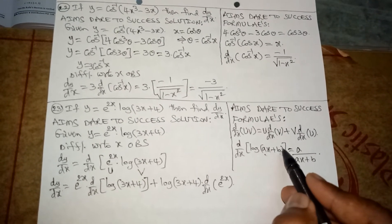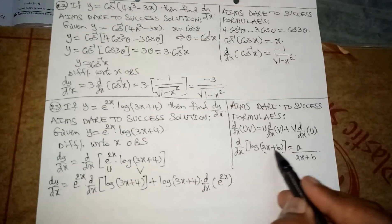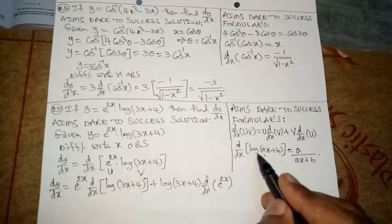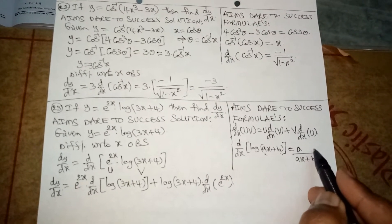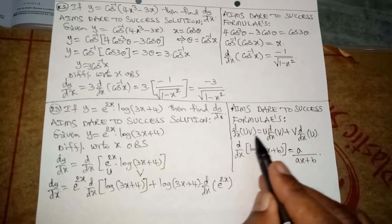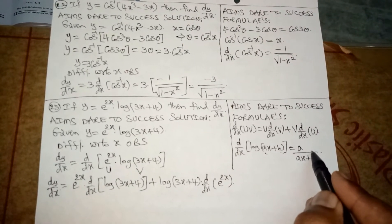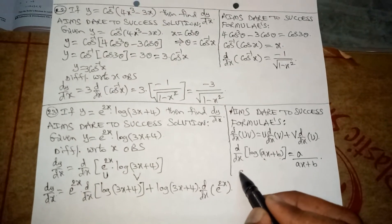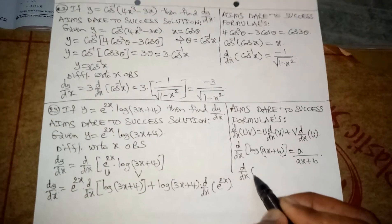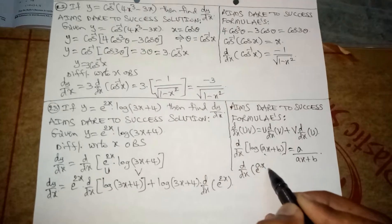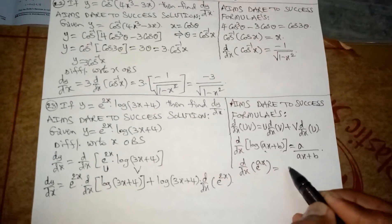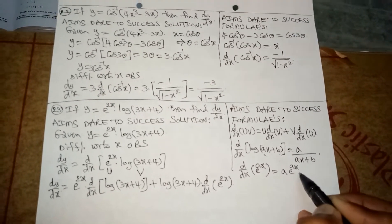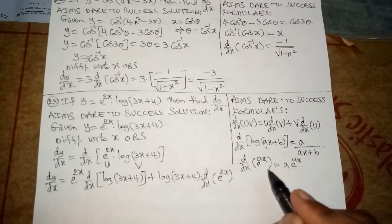The formula for d/dx of log(ax + b) — using d/dx of x is 1 and d/dx of constant is 0 — directly gives a/(ax + b). And the formula d/dx of e^(ax) is a · e^(ax). We will be substituting these same values.